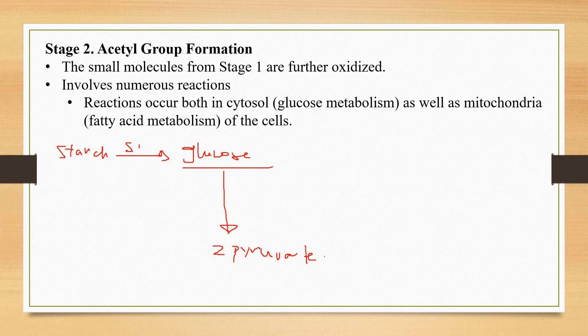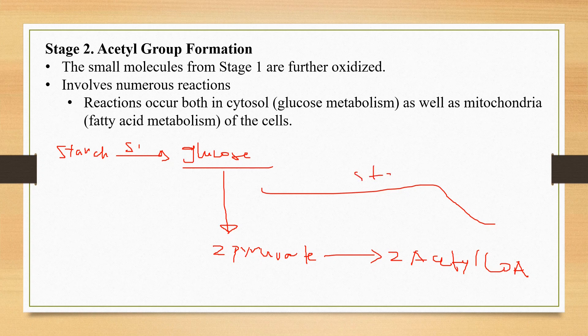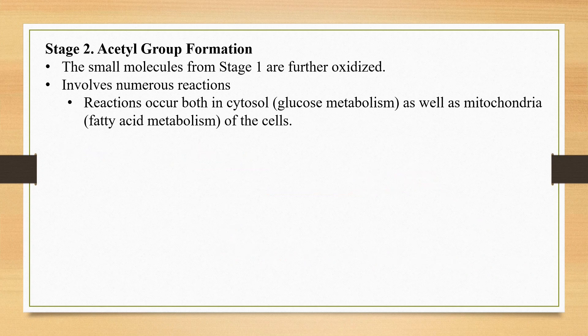The two molecules of pyruvate will be converted into two molecules of acetyl-CoA. These steps are stage two, which can be summarized as acetyl group formation. The acetyl group formation can take place in two compartments: some reactions occur in the cytosol, while others take place in the mitochondria.